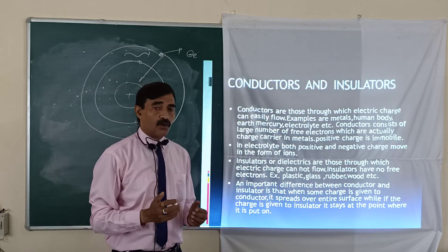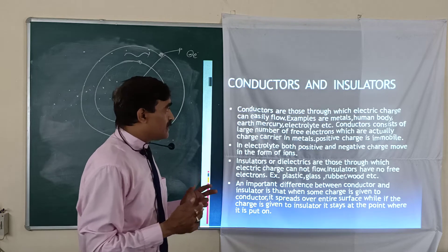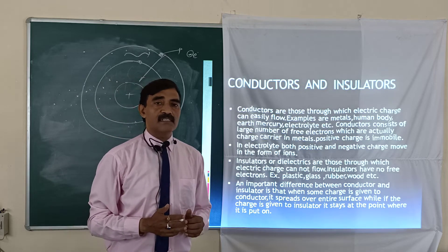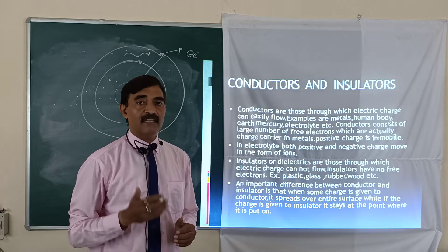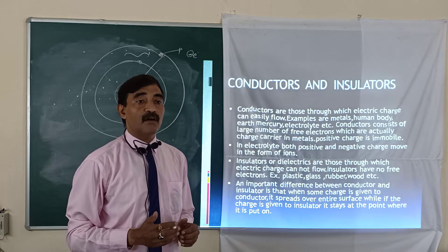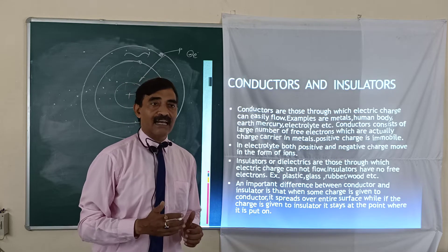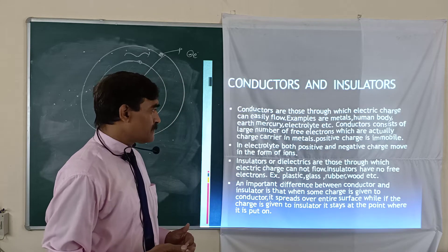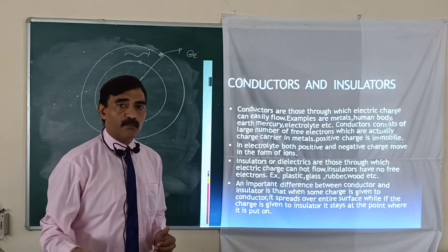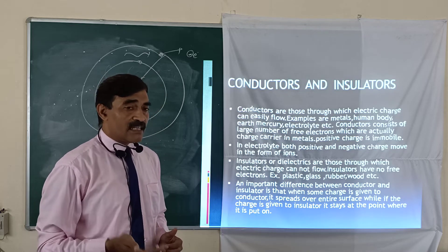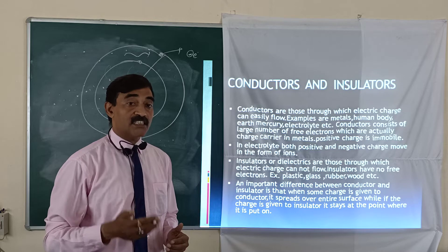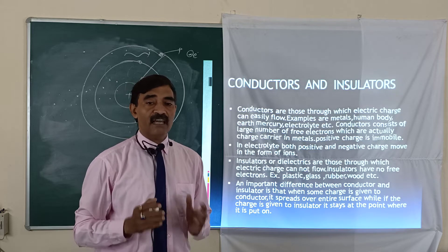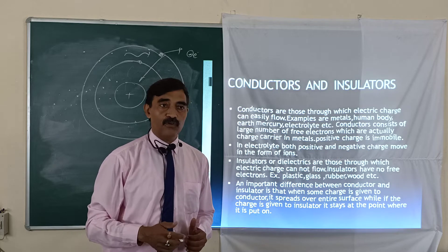The main cause of charge on a body is the transfer of electrons. There are two types of bodies: conductors and insulators. Conductors are substances through which charge or electric current can flow, and they have a large number of free electrons, giving them very high conductivity — like metals, water, and the human body. Insulators are bodies through which electric charge cannot flow; they have no free electrons, so conductivity is almost zero — like wood and plastic.